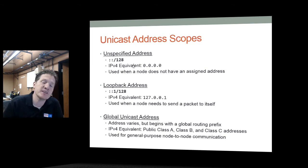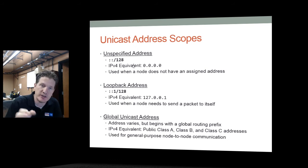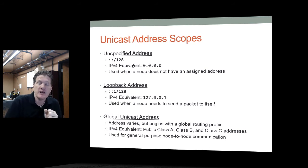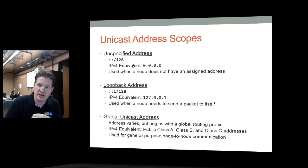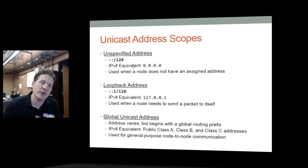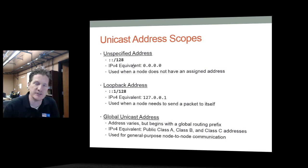Your machine can also be assigned a global unicast address. Every machine will have a different one, but the global unicast address begins with a fixed global routing prefix. The IPv4 equivalent was having public addresses like class A, class B, or class C. This is for general communication from node to node across the internet — what we call the global unicast — and it allows you to communicate globally.